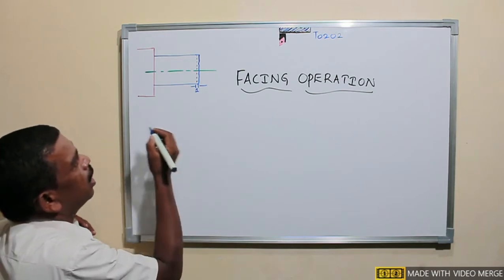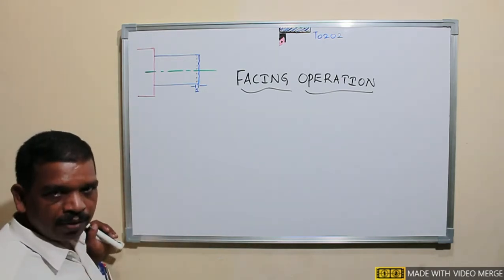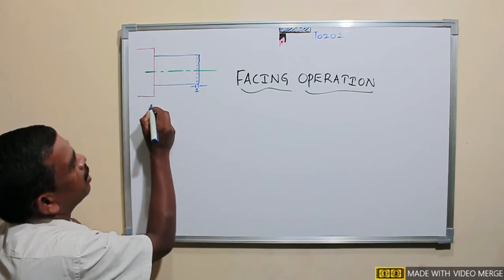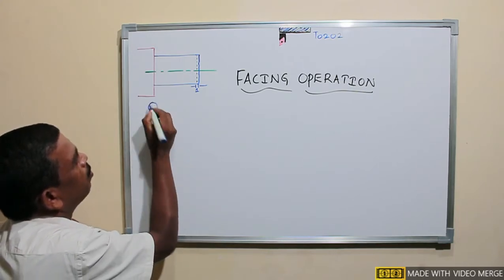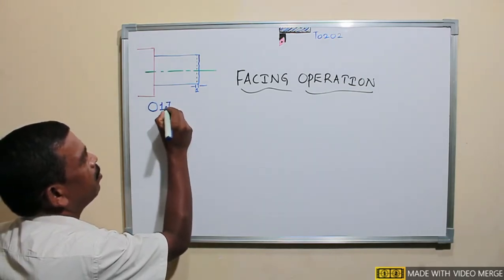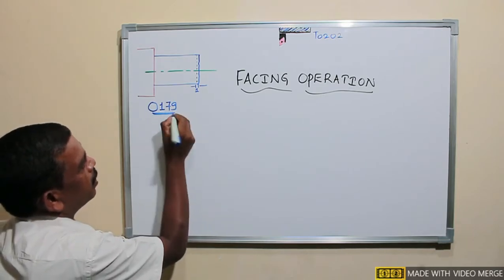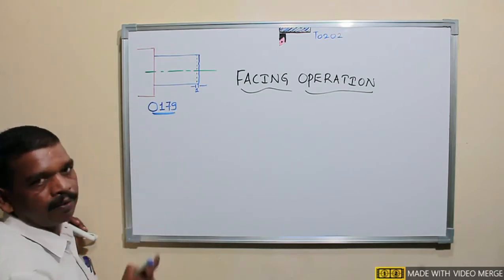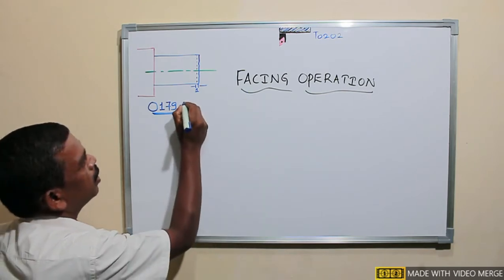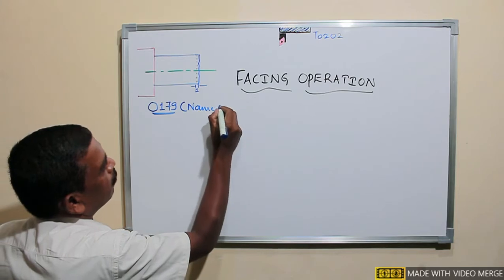Our programming procedure will start with the name of the program. I will start with the alphabet O followed by a number. This is the identification for our program — that is the facing operation. This is the name of the program.